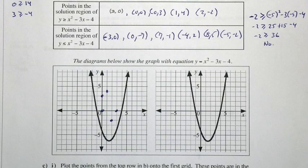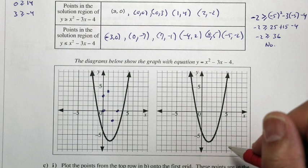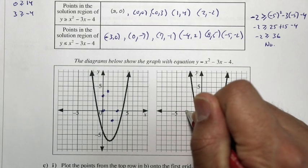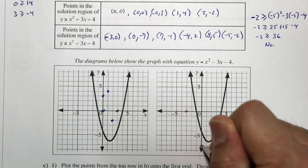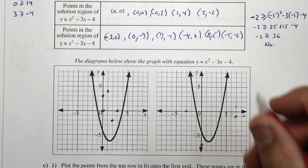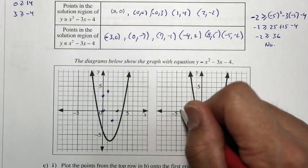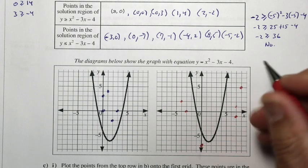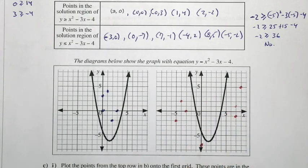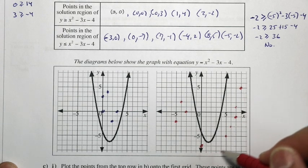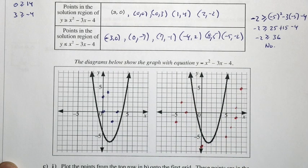Let's plot the points from the second row onto the second grid. These are the points in the solution region of y is less than x squared minus 3x minus 4. So we plot (negative 3, 0), (0, negative 7), (7, negative 1), (negative 4, 2), (8, 5), and (negative 5, negative 2). All of these points satisfy y less than x squared minus 3x minus 4.